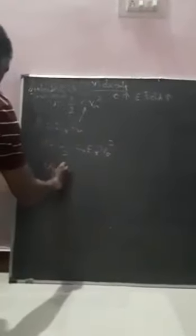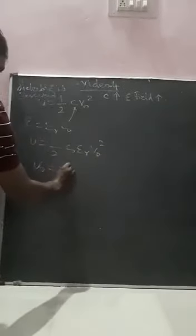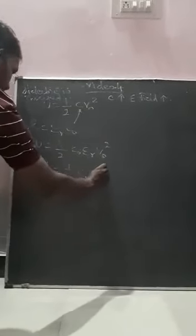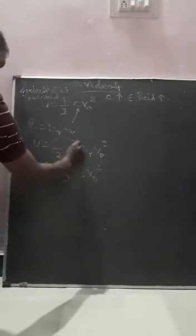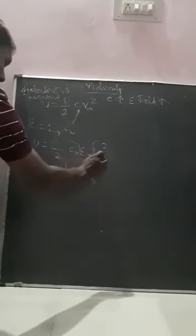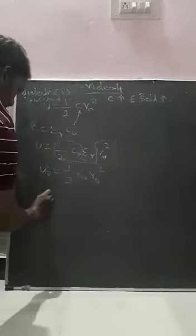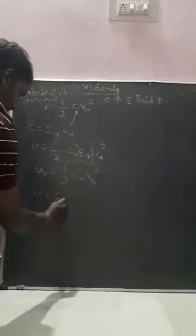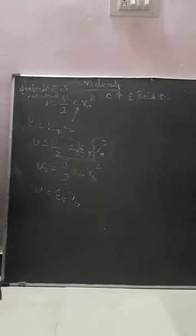We already know that U₀ = ½·C₀·V₀². Since ½·C₀·V₀² can be written as U₀, when the dielectric slab is inserted the energy stored is U = εr·U₀.